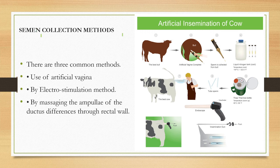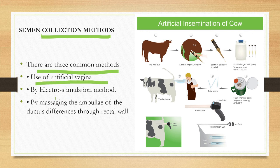The first procedure in artificial insemination is the semen collection method. There are three common methods: one is the use of an artificial vagina, the second is the electrostimulation method, and the third is massaging the ampulla of the ductus deferens through the rectal wall. The most common method is the use of an artificial vagina.